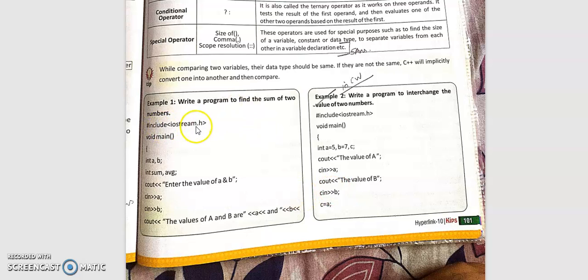A program is given. iostream.h is used here, whereas in C it was stdio.h. Inside the program we define integer sum and average. Then cout means print statement. Enter the value gets printed, then cin is our scan statement. It will read the value of a and b, and again it will print the values.